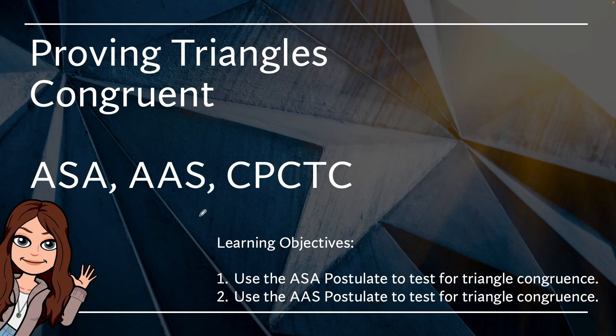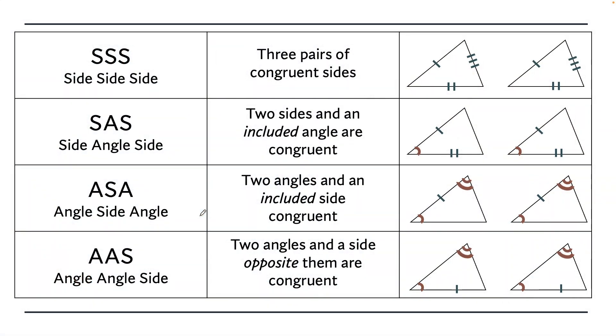Hello and welcome back. Mrs. Saunders here and we're continuing our adventure into proving that two triangles are congruent. Last time we learned the shortcuts side-side-side and side-angle-side, and today we're learning two more plus a little bonus called CPCTC. The four shortcuts we can use to prove triangles are congruent are side-side-side, side-angle-side, angle-side-angle, and angle-angle-side.